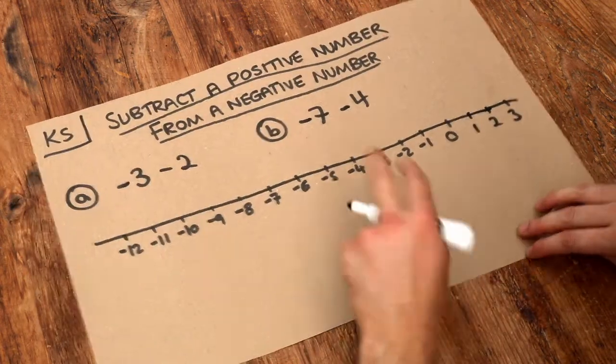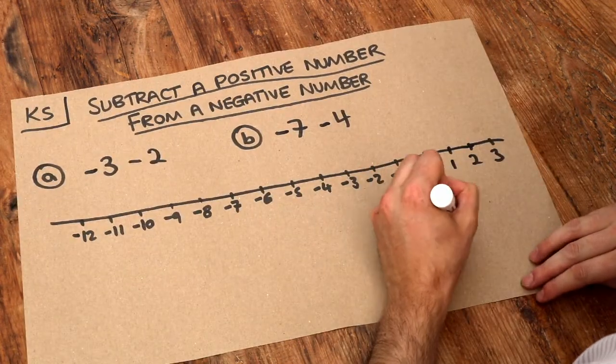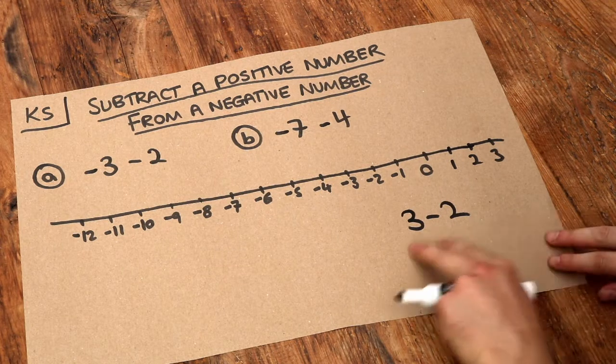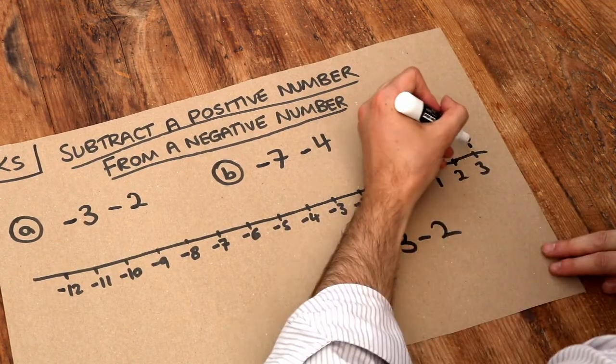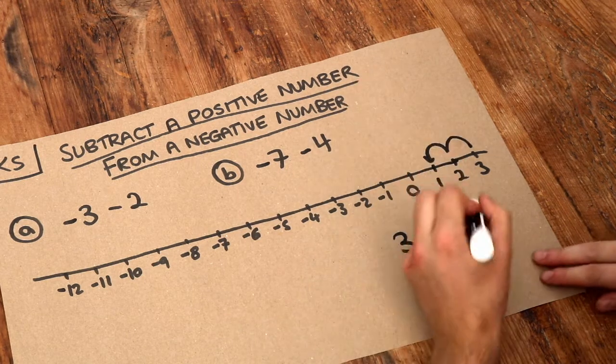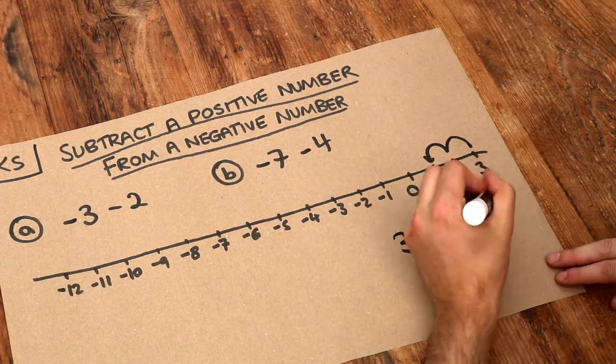Imagine if I just had a really simple subtraction like 3 minus 2. How would you do that on the number line? Well, you'd start at 3, and if I'm subtracting 2, I move 2 down the number line and I would end up at 1, as you can see.